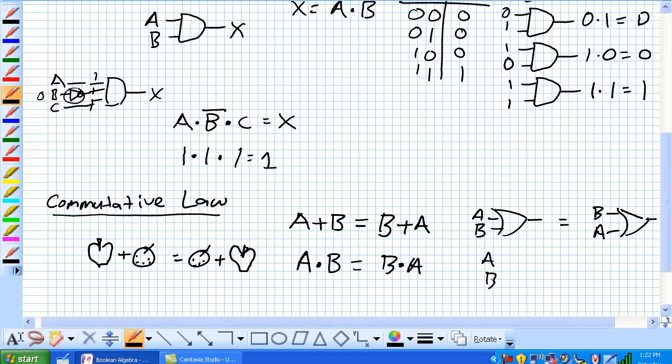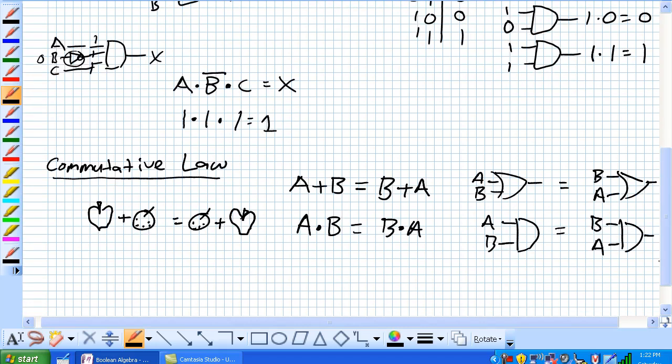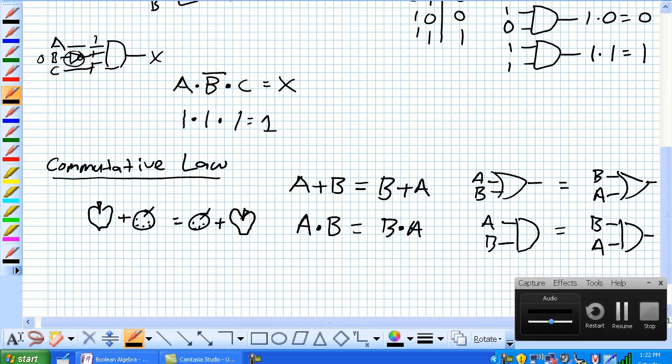Same thing with A and B is equal to B and A. What this looks like graphically is A and B are being fed into an AND gate, and that's exactly equivalent to B and A. There's no positional preference on an AND gate.